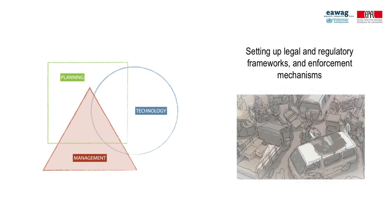Setting up legal and regulatory frameworks and enforcement mechanisms. Having one entity of a city government solely responsible increases a sense of responsibility that can be lost in more fragmented management models. Streamlining eliminates any responsibility overlap between stakeholders and also avoids gaps in responsibilities.